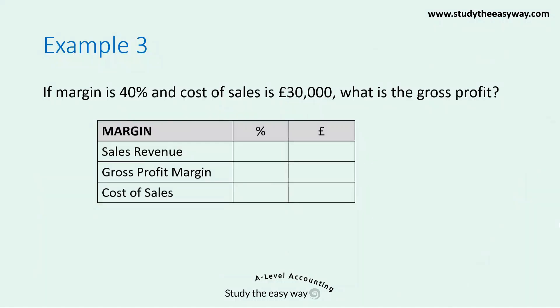Example three. You can even use this technique to calculate a missing gross profit figure. If margin is 40% and cost of sales is £30,000, what is the gross profit? This is a margin question, so we fill in the three categories in the right order: sales revenue minus the gross profit margin equals cost of sales. We deem sales revenue to be 100 and take away the margin of 40, giving cost of sales of 60. The cost of sales is £30,000.